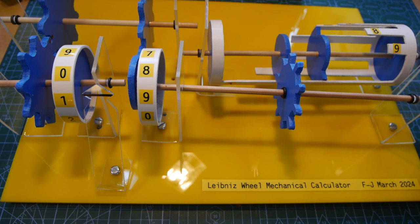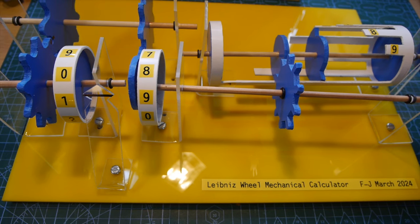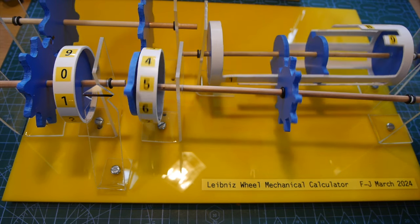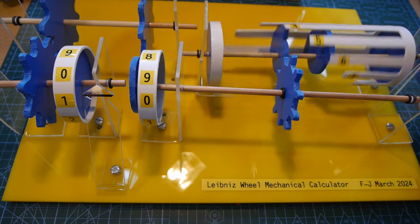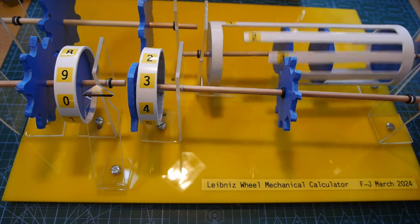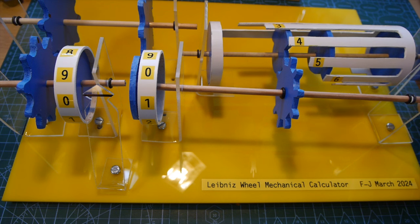So finally let's look at how you do dividing. To divide 19 by three for example set up 19 on the output number drums and with the counter wheel set at three on the Leibniz gear wind whole turns backwards counting them until you reach a number less than three.